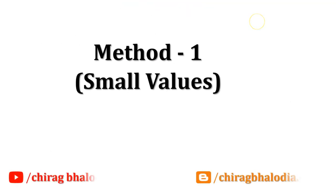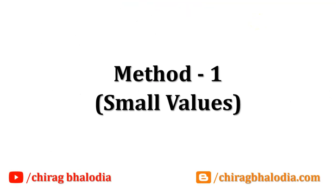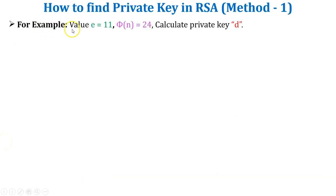In this video I will explain three methods to calculate the private key component in RSA algorithm. Let's start with the first method. In this method, the public key e and phi of n values are small. Let's take one example. The value e is equal to 11, phi of n is equal to 24. Calculate private key d. Both values are given in the question.